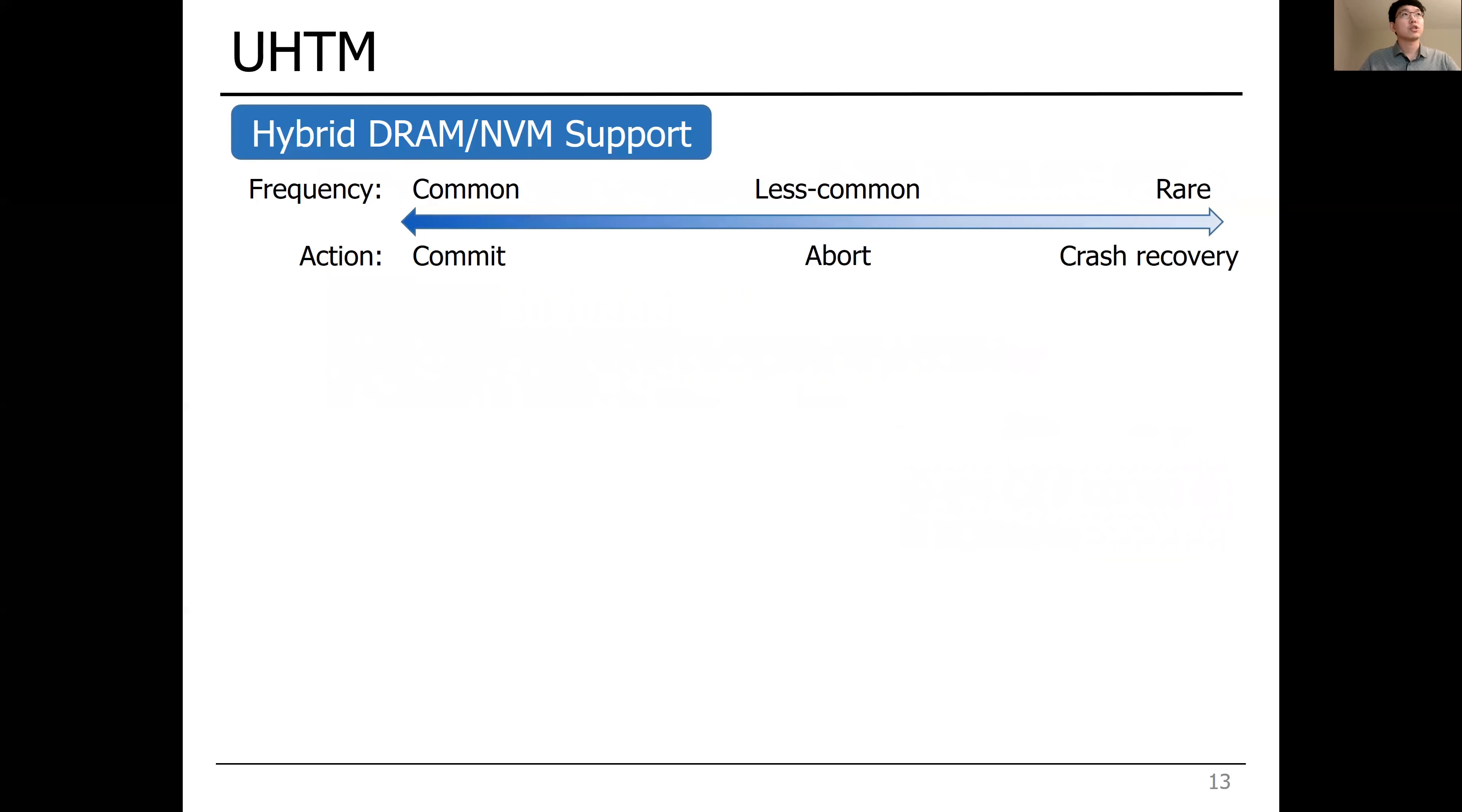In addition to conflict detection, UHTM also supports hybrid DRAM-NVM data. In other words, it should guarantee atomicity and durability of hybrid memory. So, UHTM provides hardware logging techniques to support atomicity and durability.